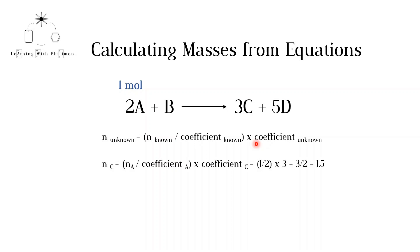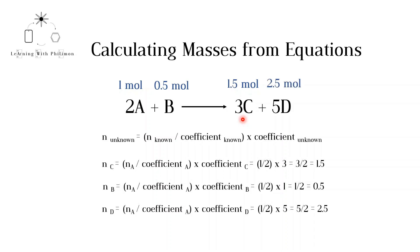To calculate the moles of C, we divide the moles of A, 1, by the coefficient of A, 2, and then we multiply by the coefficient of C, 3. Therefore, 1 mole of A would form 1.5 moles of C. The same method can be used for the rest of the species. A would need to react with 0.5 moles of B. 2.5 moles of D would be formed.